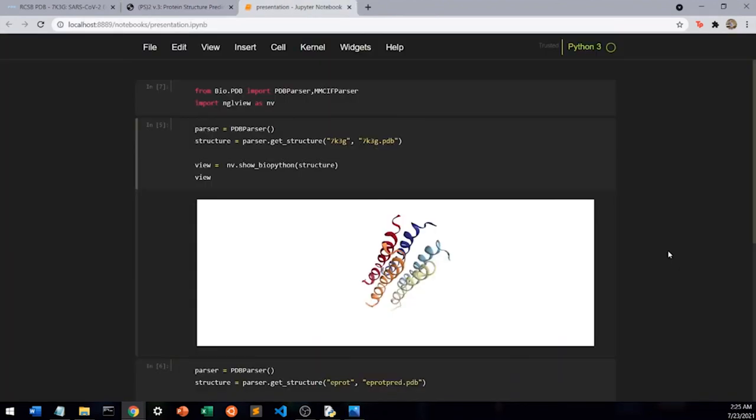Now that we have our predicted PDB file, we can display it in Python. First, we need two libraries to make this possible. Let's import a PDB parser to read in our PDB files and NGL view so we can display our proteins. Let's display our correct protein with the original PDB file from the protein data bank. Here's the result.